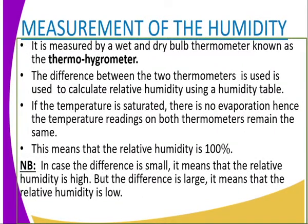We start by measuring the humidity. Humidity is measured by the wet and dry bulb thermometer — that is the instrument used to measure humidity, which is referred to as the hygrometer. It gives the difference between the two thermometers, and we get the difference between the wet and dry bulb, which is used to calculate the relative humidity.